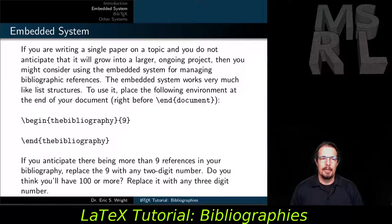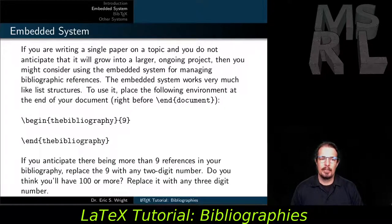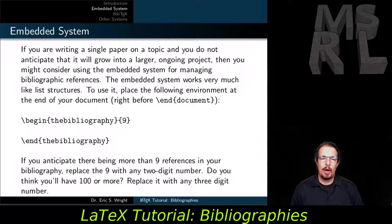We'll begin by working with the embedded system. If you're writing a single paper on a topic and do not anticipate it growing into a larger ongoing project, you might consider using the embedded system for managing your bibliographic references. The embedded system works much like list structures. To use it, place the bibliography environment at the end of your document, right before the \end{document} statement. Open it with a \begin{thebibliography} statement — this one takes an additional required numerical argument, which we'll set to nine for now — and close it with \end{thebibliography}.